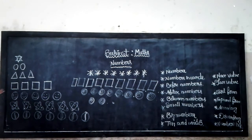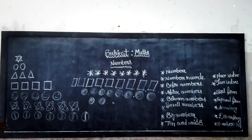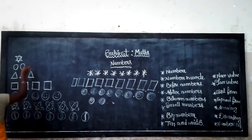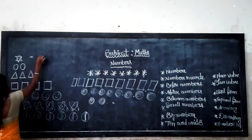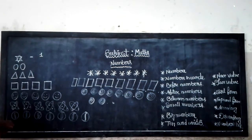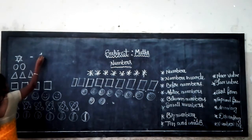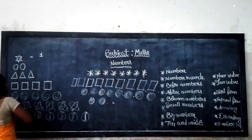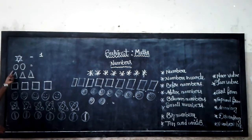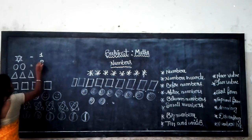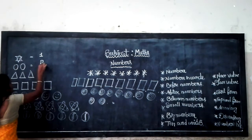Let us count the pictures. First one — how many stars are there? There is only 1. Then, how many circles? 1, 2. There are 2 circles.